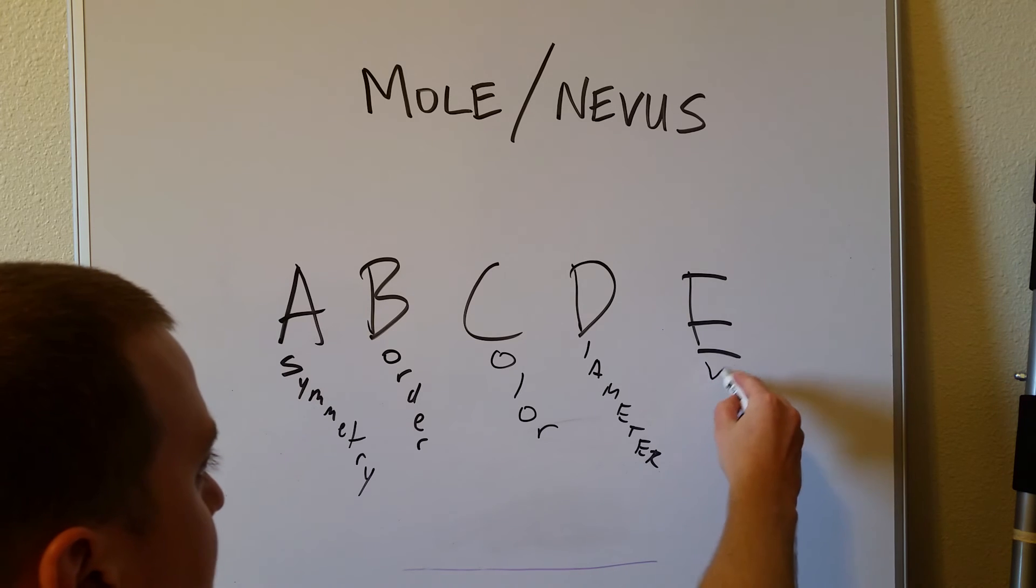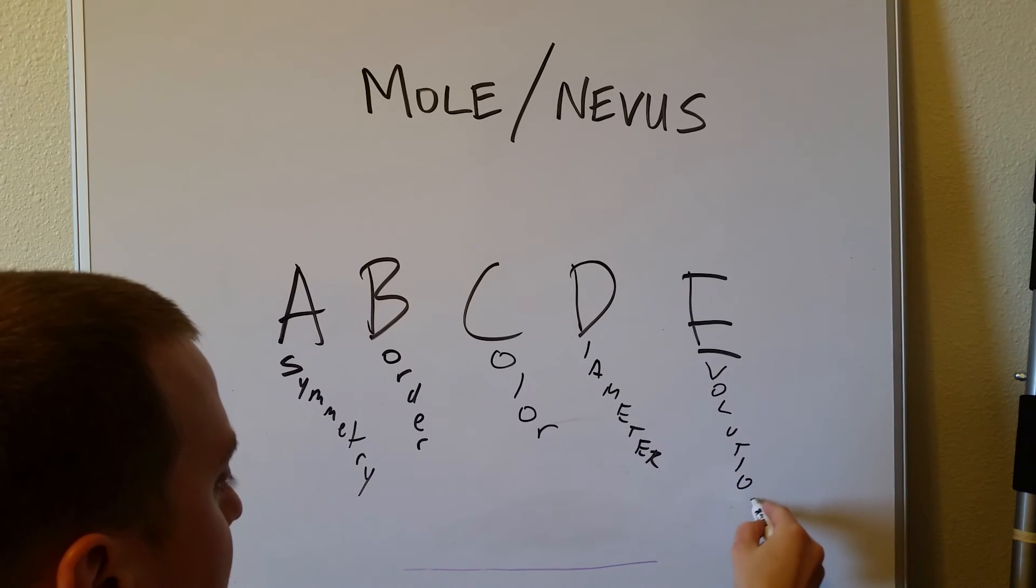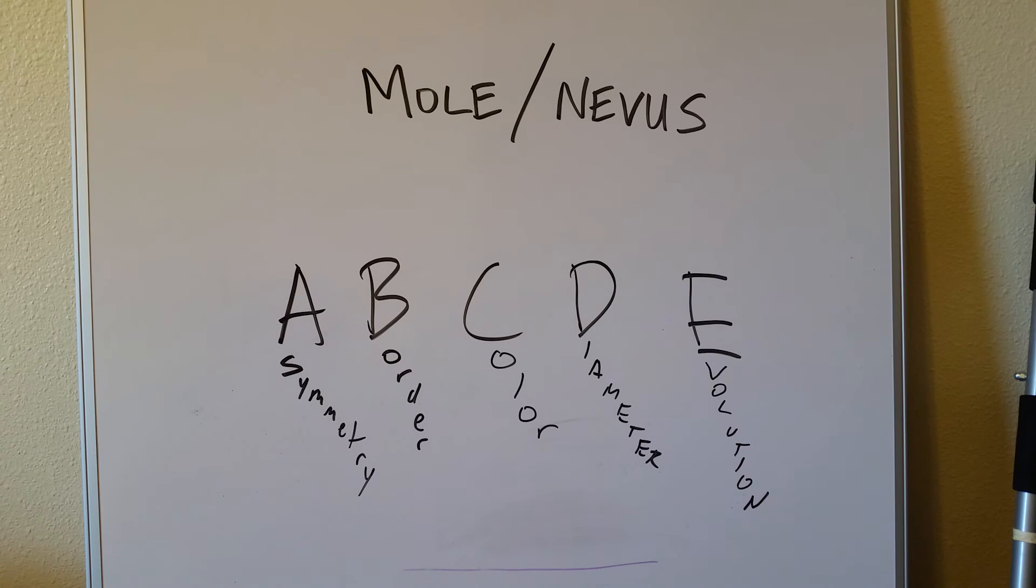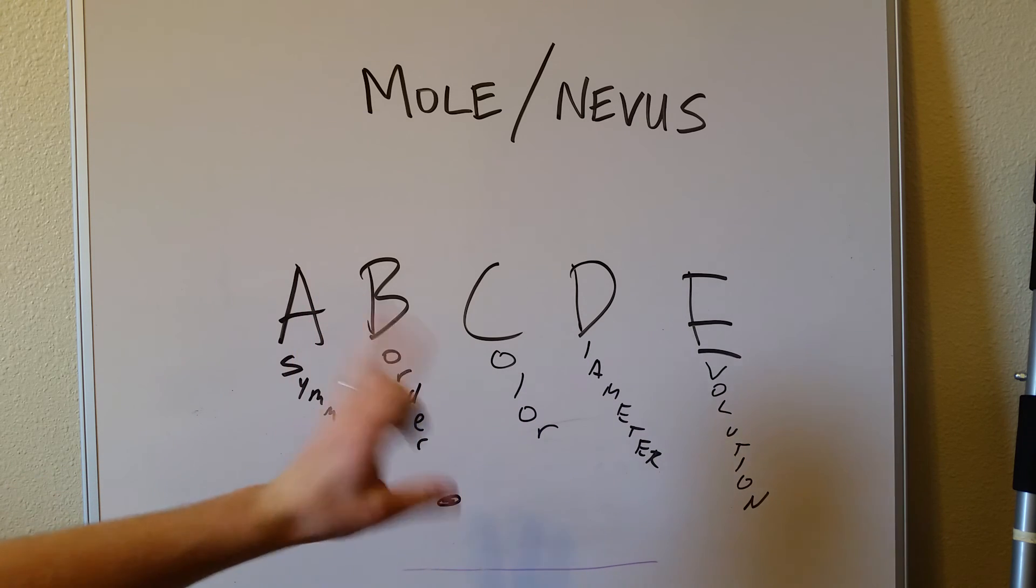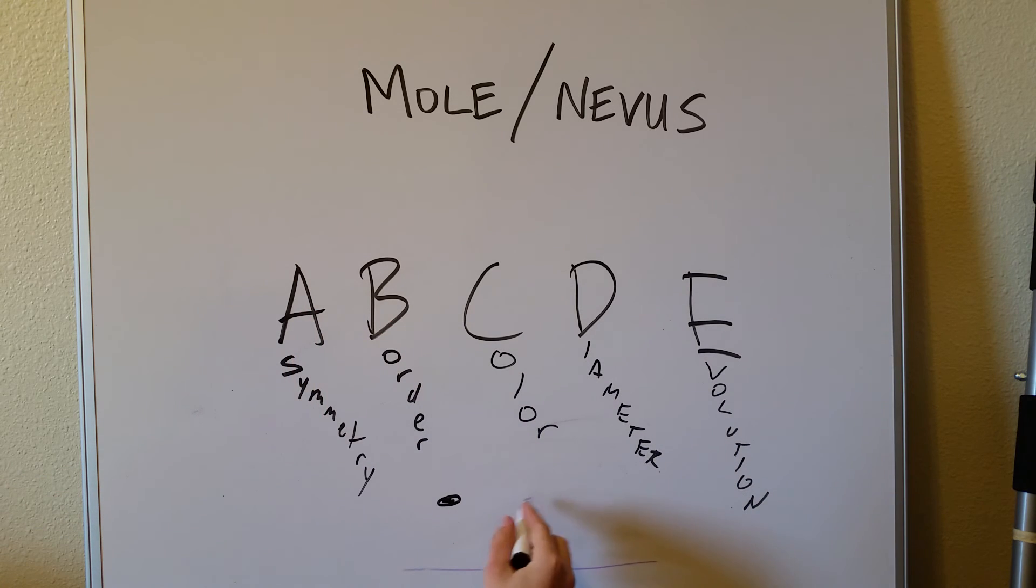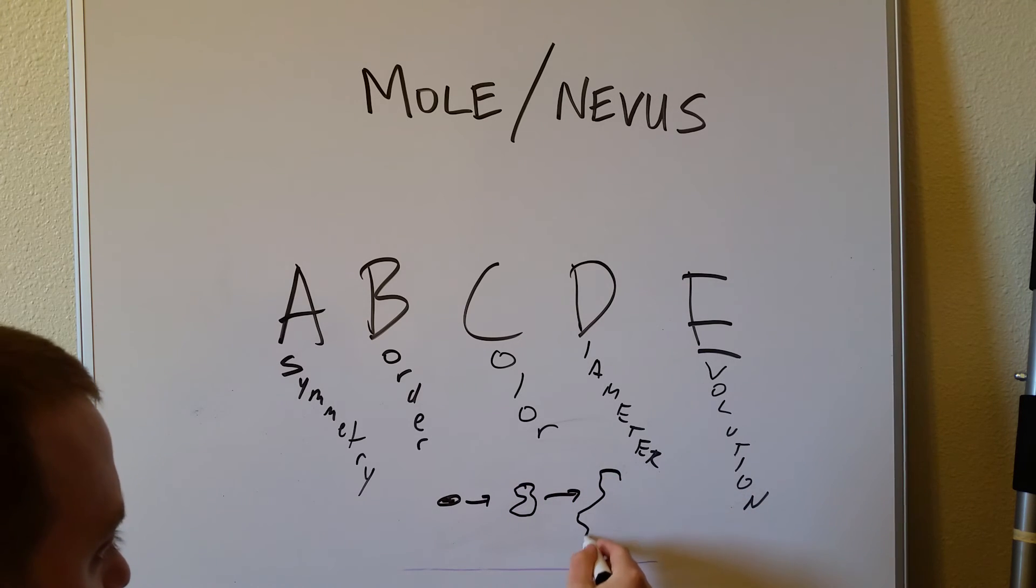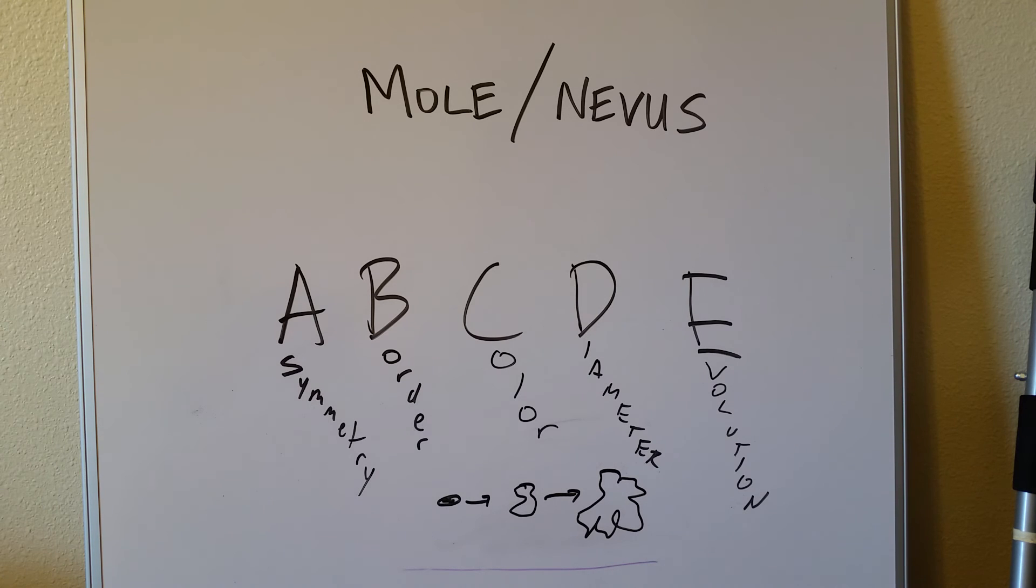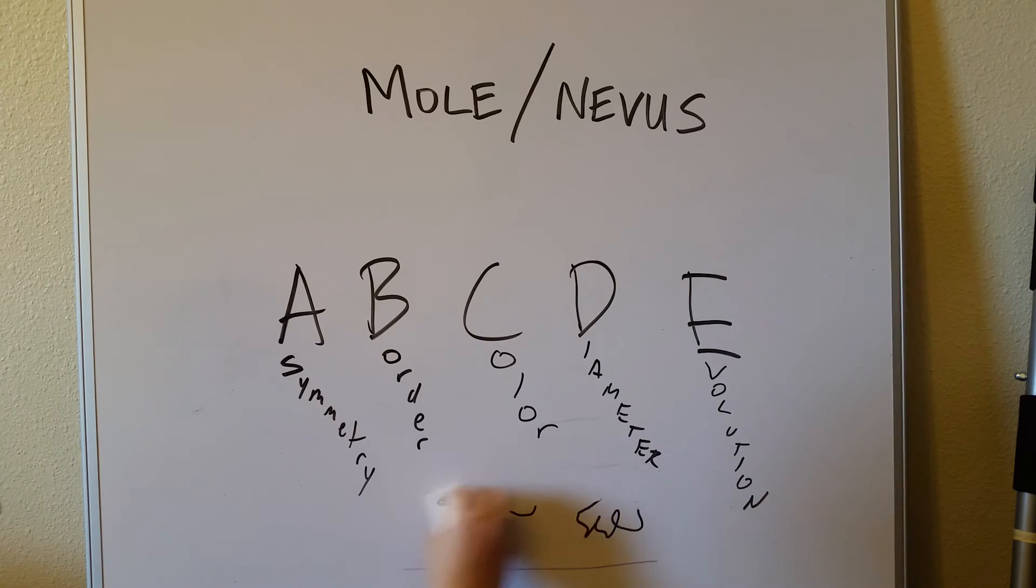Which leads us to the fifth part of this mnemonic, the E, which is for evolution. And evolution means change over time. And that's really one of the biggest indicators. If you have this beautiful little mole that you were born with, it's even in color, it's small, it's two millimeters, great borders, very symmetrical, great color, small. And over time it is just turning into more and more of this beast that is huge and spiculated and abnormal coloring and all that stuff. That's evolution. It's changing over time. And if you have evolution, that's a very, very strong indicator that you should get that mole checked out.